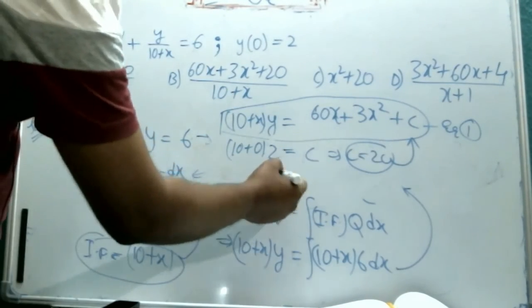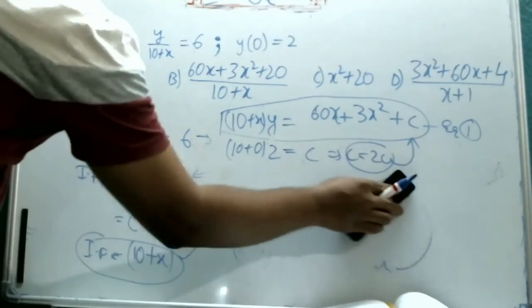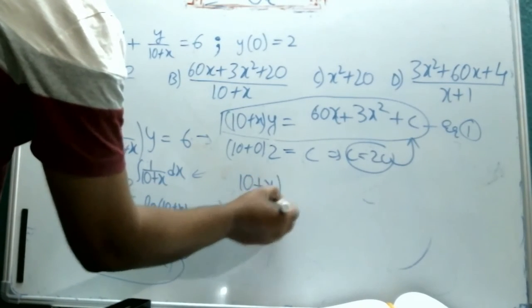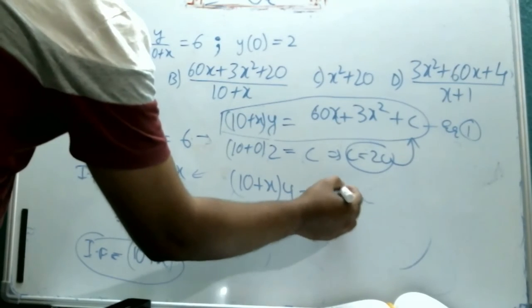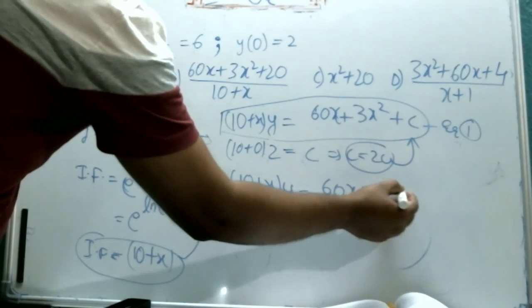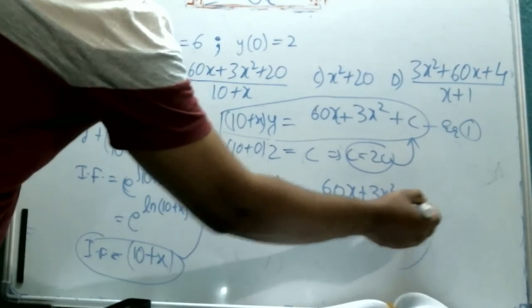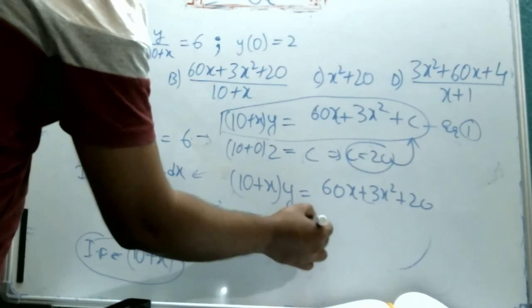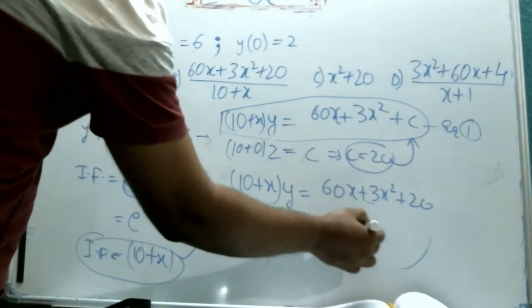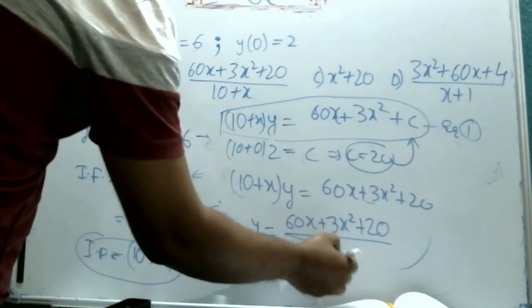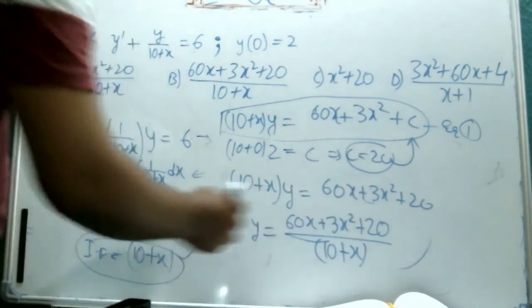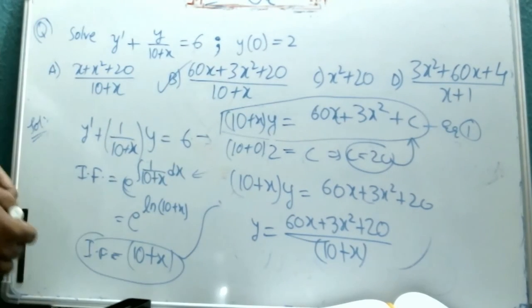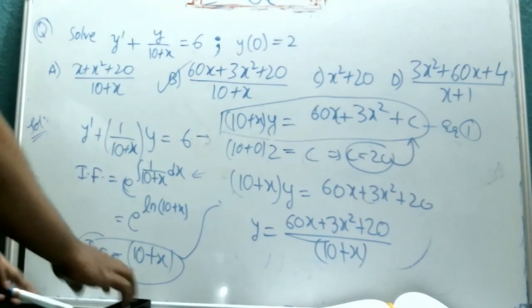Substitute it back here in this equation. What we will finally get is 10 plus x into y equal to 60x plus 3x square plus 20. So y equals 60x plus 3x square plus 20 divided by 10 plus x. This is what we are going to get. That is the option B. This is how to solve such a problem. Thank you.